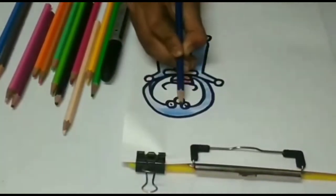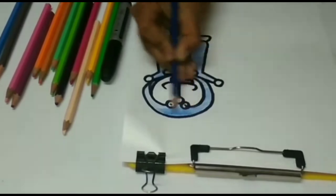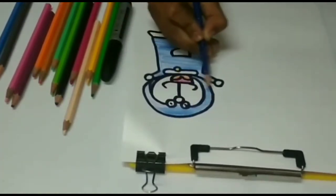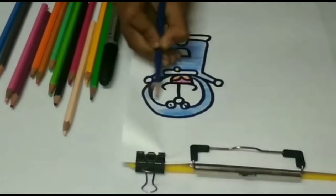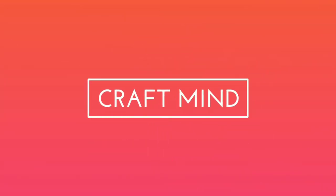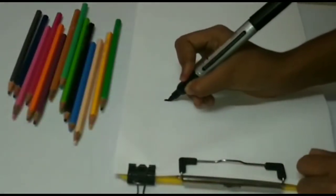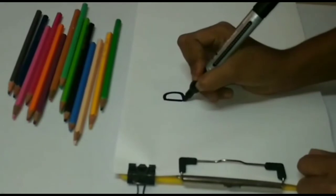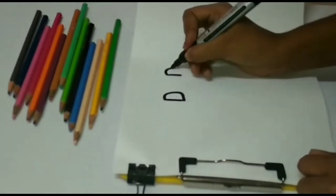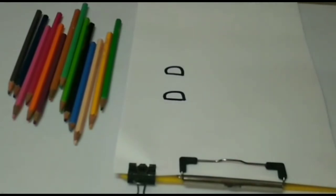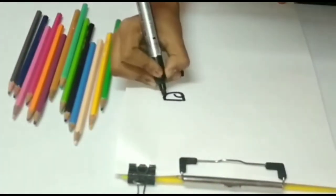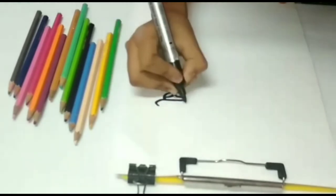Hey guys, so today I'll show you how to make a Doraemon with the letter D. So let's pick a black marker, colorful pencils, and white sheet. Let's start. First of all, you have to now follow this step.